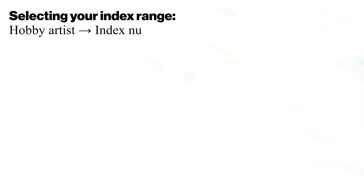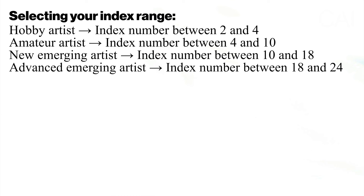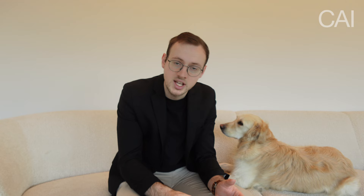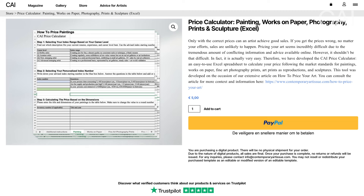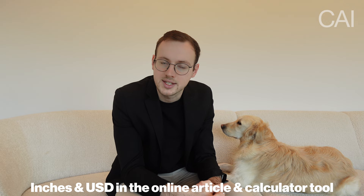The index ranges for three-dimensional art are different from those used with two-dimensional art because we have a third dimension. I advise hobby artists to use an index number between 2 and 4. Amateur artists should opt for an index range between 4 and 10. New emerging artists between 10 and 18, and advanced emerging artists between 18 and 24. Please note these ranges are when using centimeters and calculating prices in euros. Our online article and calculator tool also offer a model for inches and US dollars.